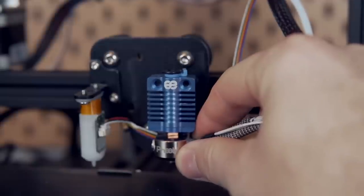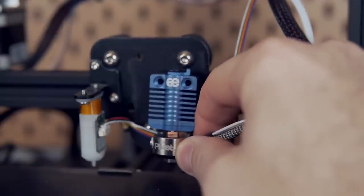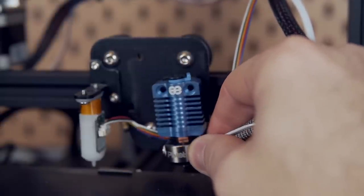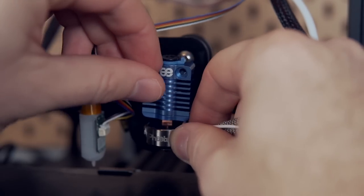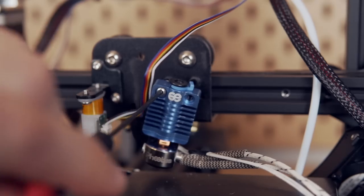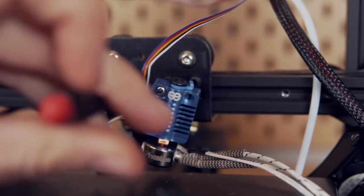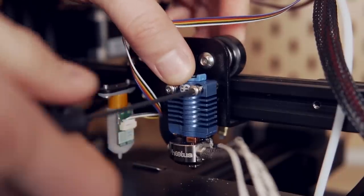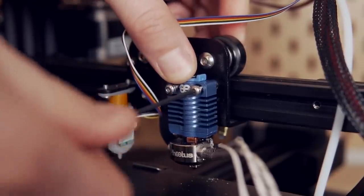With the old hotend removed, you can grab the Dragonfly fully assembled and line it up with the back plate. We'll be using the same two screws and the same mounting points on that back plate to bolt this. Just make sure that the thermistor and the heater cartridge wires are coming out the right side, which is the same side as the stock heater cartridge.